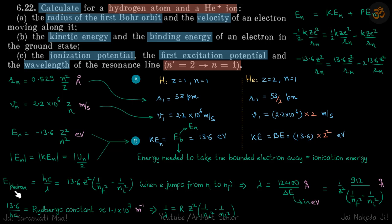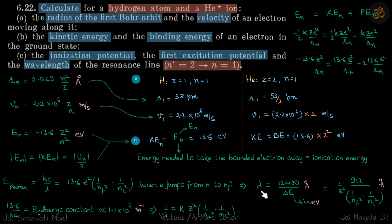When the electron jumps from one orbit to another, the change in energy is released in the form of a photon. So En₂ - En₁ gives the energy of the photon. We can then find the wavelength: λ = 12400 / ΔE, which gives λ in angstrom when ΔE is in electron volts.